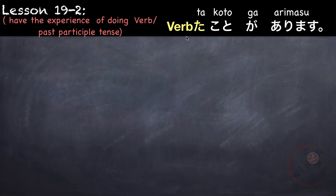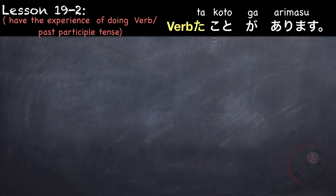Moving on, the first application of the ta form of the verb is stating that you have experience doing a verb — or in English grammar, it is the present perfect tense. Using the pattern verb ta form followed by koto. In lesson 18, we learned about suru koto ga dekimasu. Essentially, adding koto after the verb makes the verb into a noun. So here, verb ta koto ga arimasu literally means to have the experience of doing a verb.